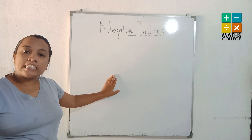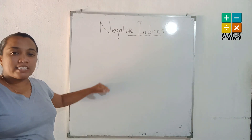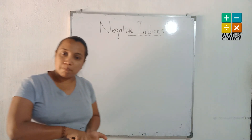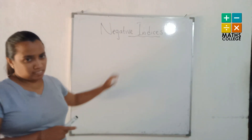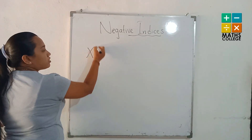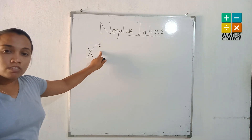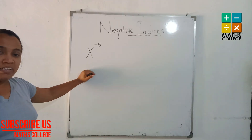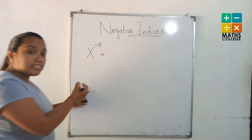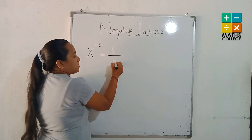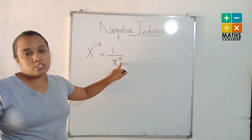Now we discuss the third law of the indices: negative indices. x to the power minus 5 has a negative index. To convert this to a positive index, x goes to the denominator: the result is 1 over x to the power 5. Negative indices are converted to positive ones this way.